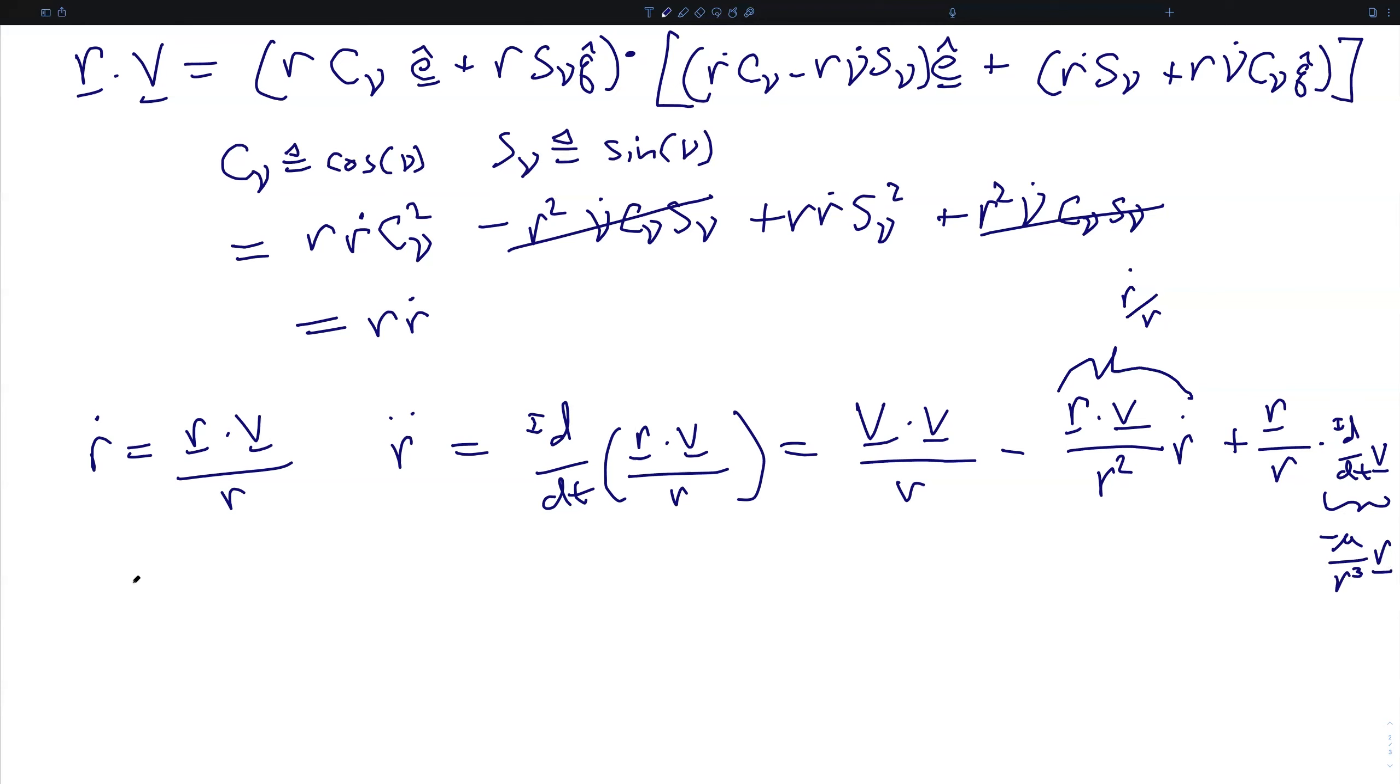we can rewrite this whole expression as r double dot over r is equal to v squared over r squared minus mu over r cubed, which we have previously defined as sigma, and minus r dot squared over r squared, which we have previously defined as p squared. And therefore, the derivative of p is equal to... And this is the quantity that we have defined as q.